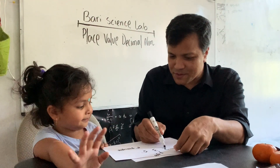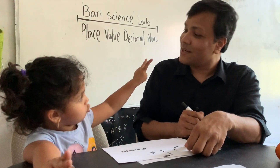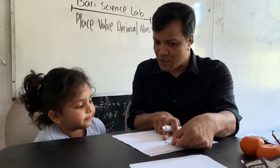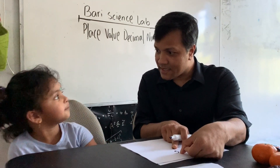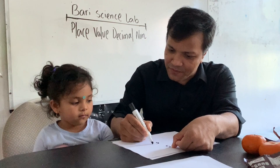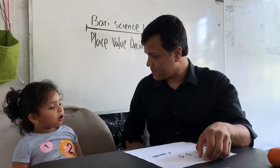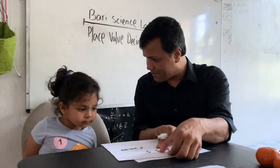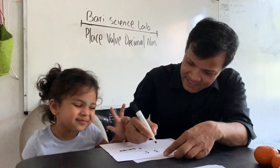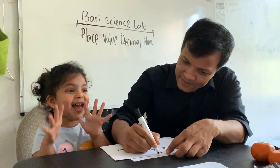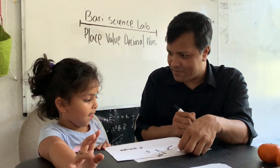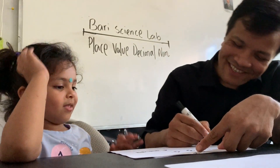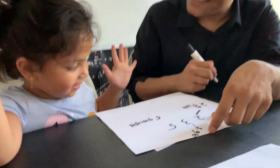How many groups of hundred do we have? Two groups — oh my god, that's right! How many groups of one do we have? Five — five groups of one. That's right. How many groups of ten do we have? Three groups of ten. Yes, three groups of ten. How many groups of hundred do we have? Two groups. That's right!